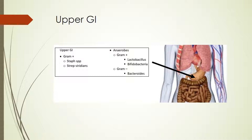The upper GI is not the most hospitable place for bacteria to be growing, especially in the stomach where we have that low pH. But we do start to see more and more bacteria as we move along the small intestine. The bacteria we find here include Staph species and Strep viridans for gram-positives, and for anaerobes we start to see those classic gut anaerobes — gram-positive anaerobes like Lactobacillus and Bifidobacteria, and gram-negative anaerobes like Bacteroides. When thinking about empiric coverage here, we focus mostly on gram-negatives and those anaerobic species.